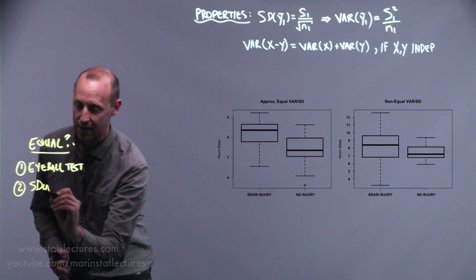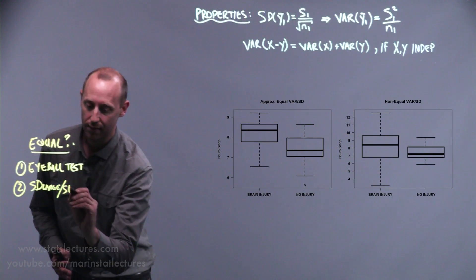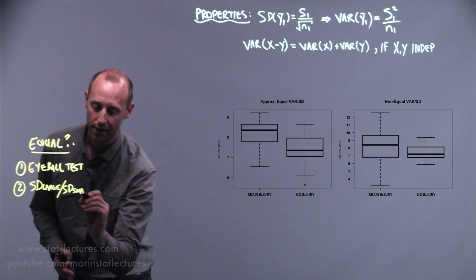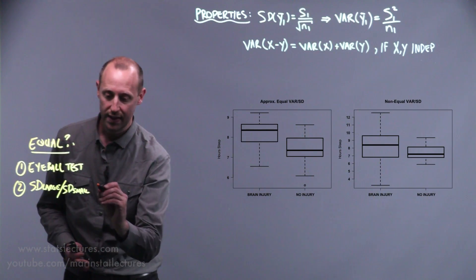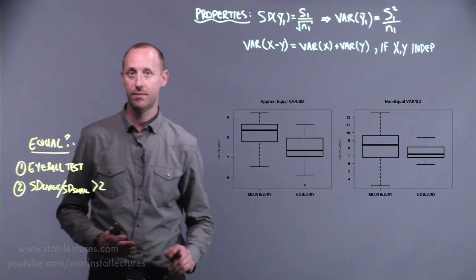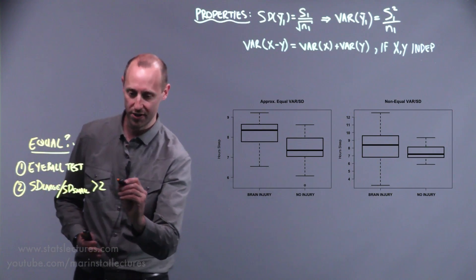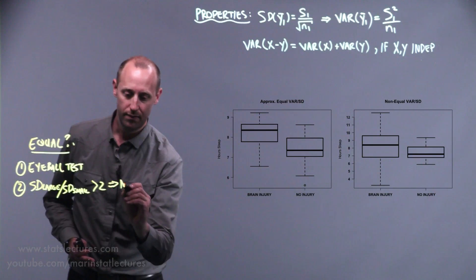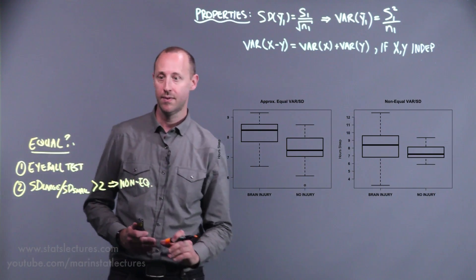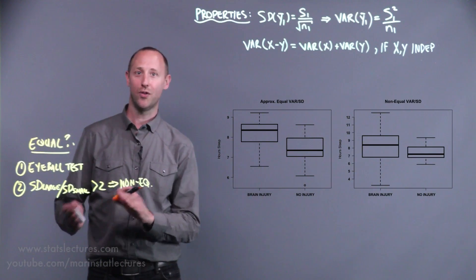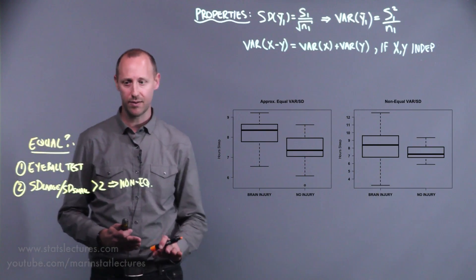We can take the largest standard deviation divided by the smaller standard deviation and check if this ratio is greater than two. If the larger standard deviation is more than double the smallest, we work with the non-equal assumption. If not, we can work with the assumption that they're approximately equal at the population level.